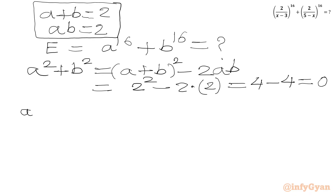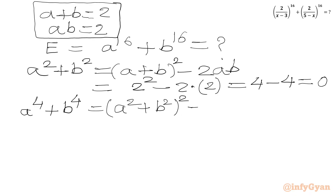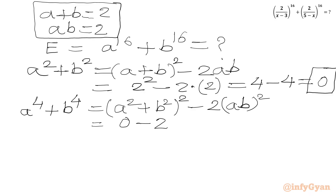Next, a to the 4th plus b to the 4th equals (a squared plus b squared) squared minus 2(ab) squared. Substituting: 0 squared minus 2 times (2 squared) equals 0 minus 2 times 4 equals minus 8.